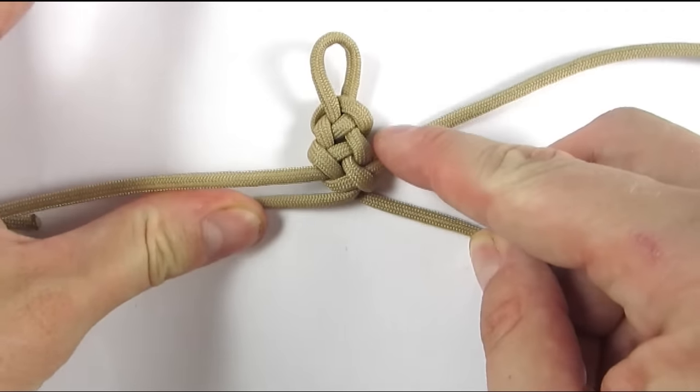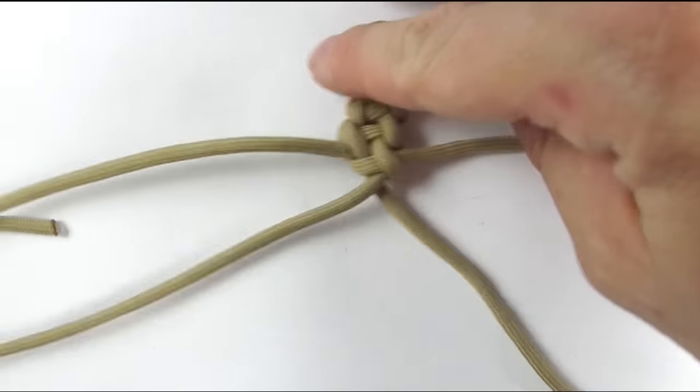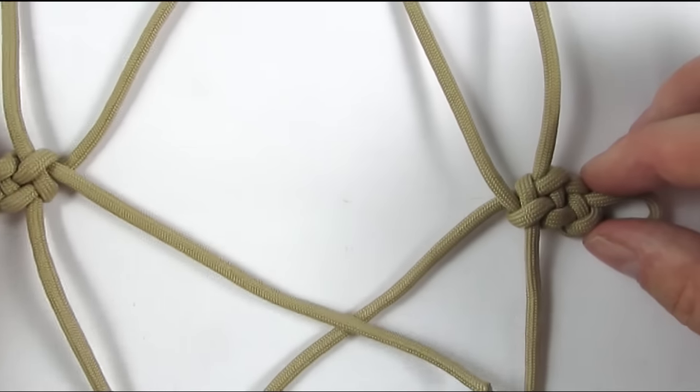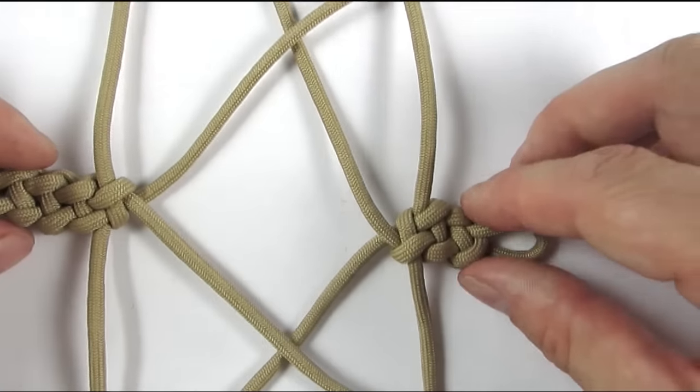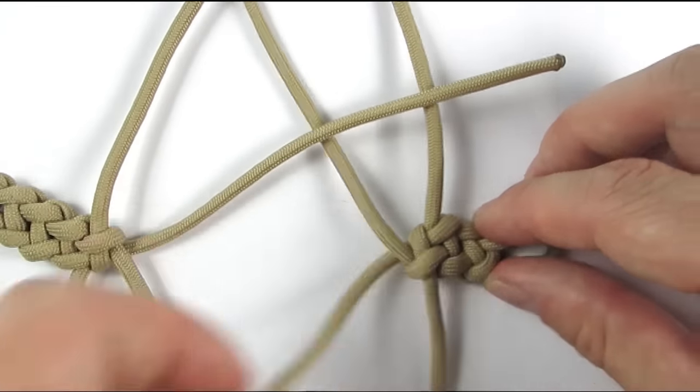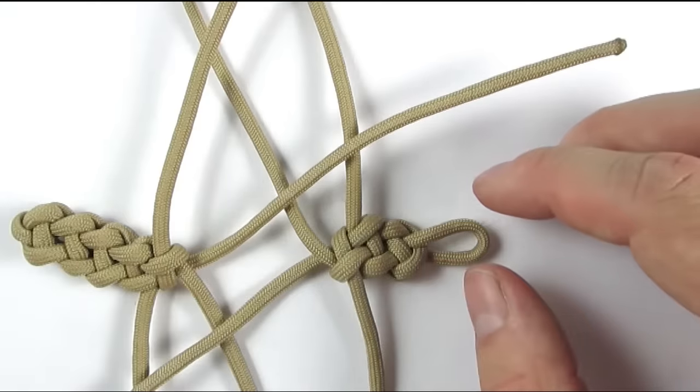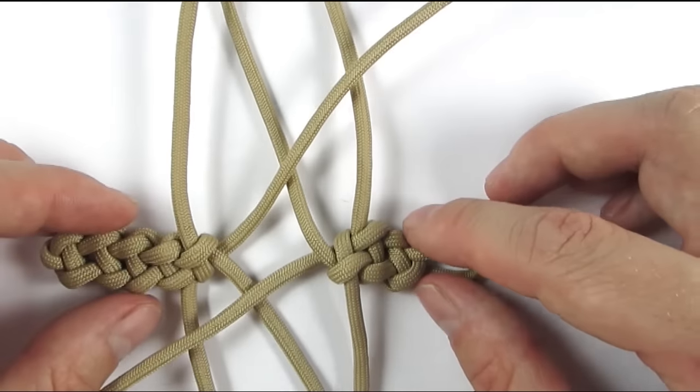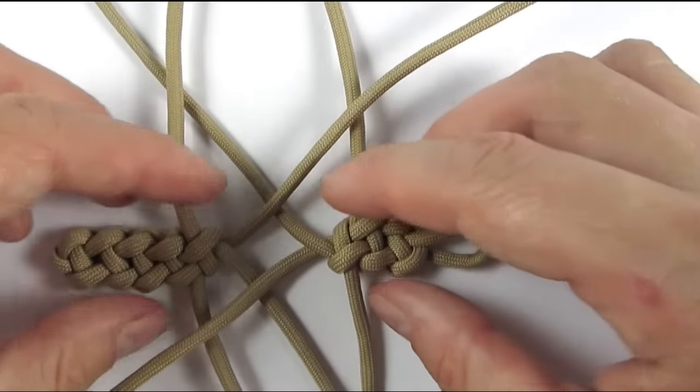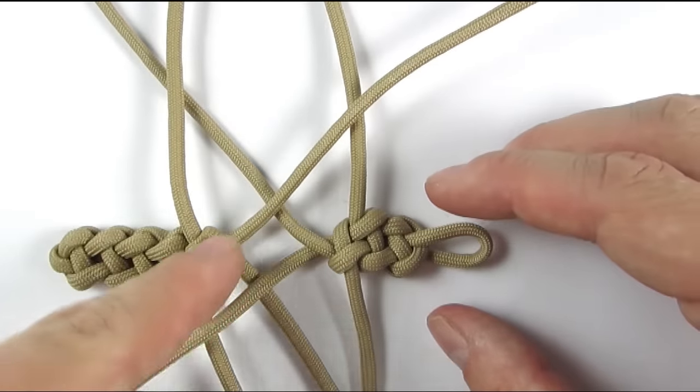So with this done we can now start joining the two pieces into a cross. So basically I set them up to get an over one under one sequence at the middle. This is not mandatory but it makes your cross look a bit more intricate. So like this.